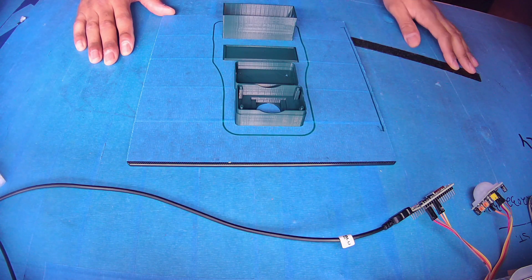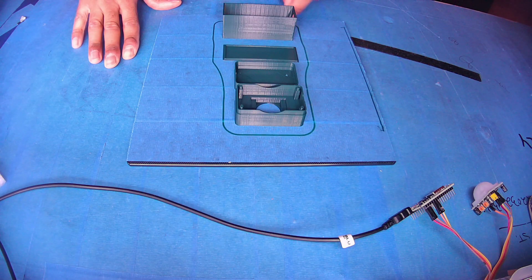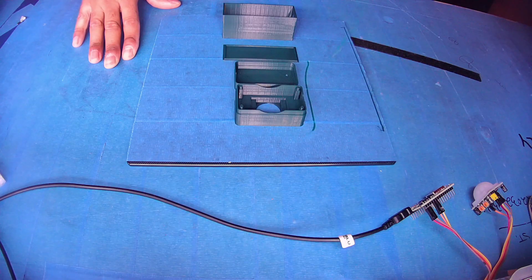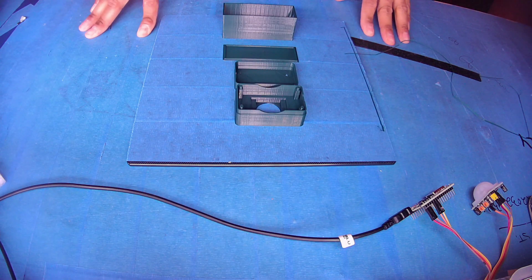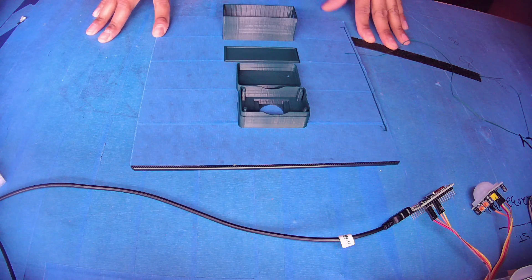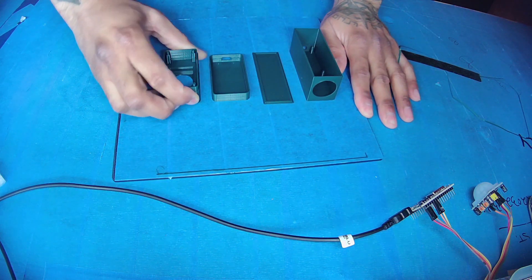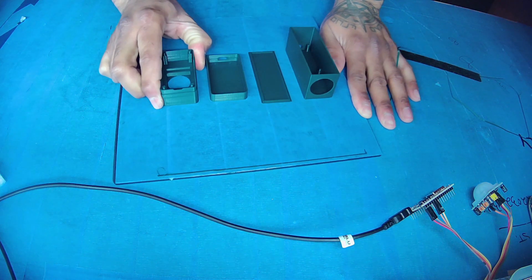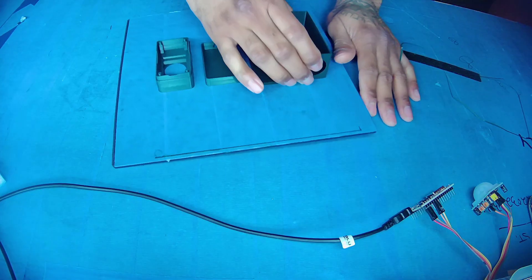First things first, we need to go ahead and take this 3D print off the bed. Hopefully the tape will help. It should be relatively easy to take off because of the tape, though sometimes I do run into issues.